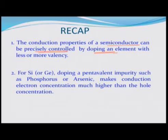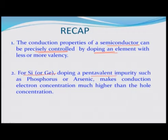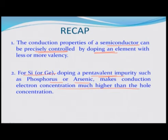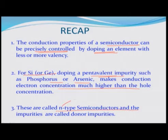We talked about what elements we dope. In silicon or germanium — our model semiconductor — if you dope a pentavalent impurity such as phosphorous or arsenic, that will make it N-type. We call it N-type, negative type, and that makes the conduction electron concentration much higher than the hole concentration. These are called N-type semiconductors; N stands for negative, because the majority charge carriers are electrons and they have negative charge.